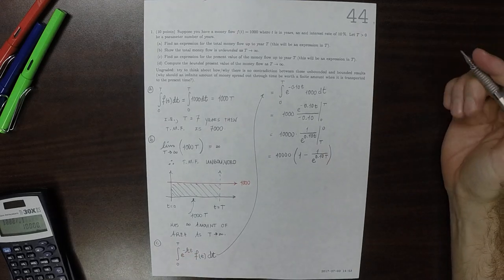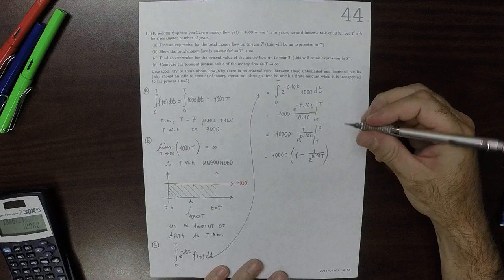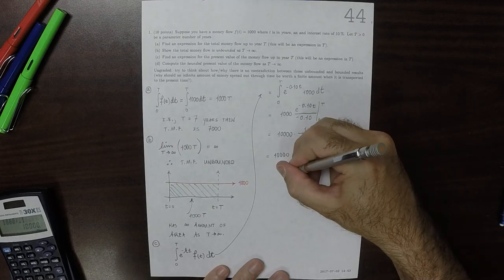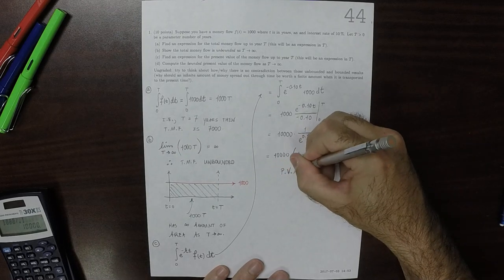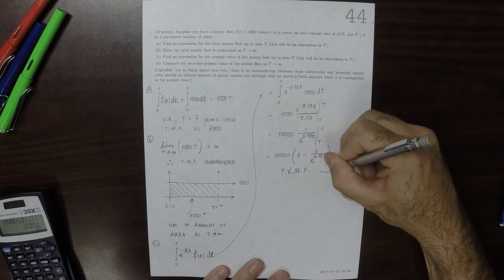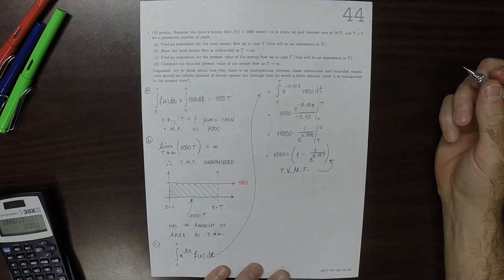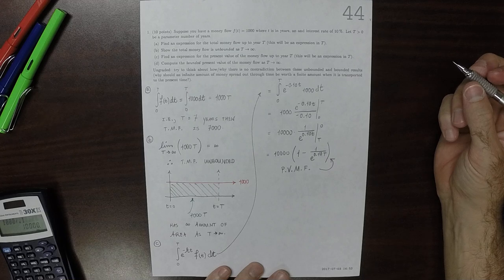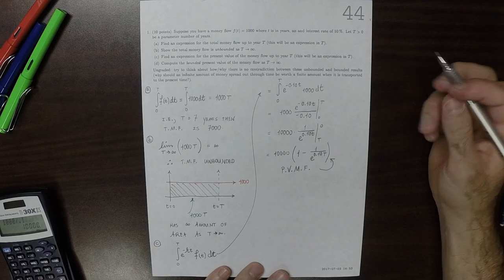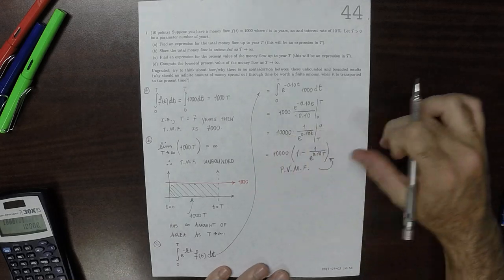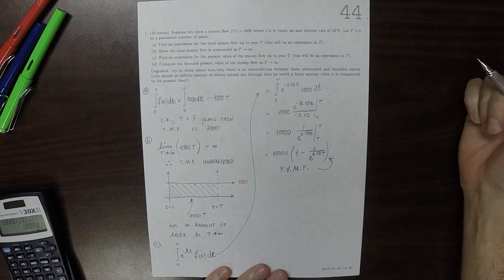Okay. So that's the present value of the money flow. And that's supposing that you stopped the procedure at capital T years.